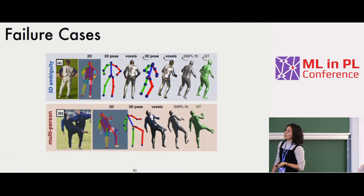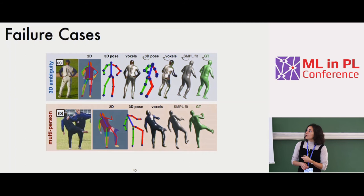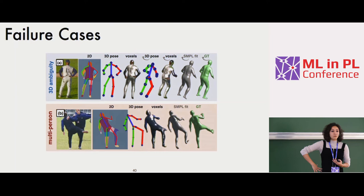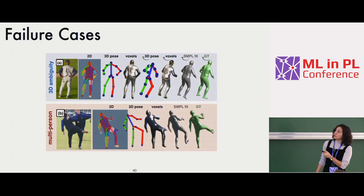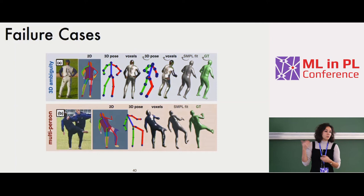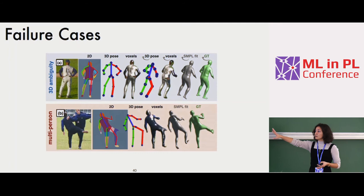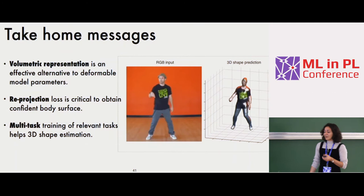Interesting failure analysis: typical failures of 3D estimation from 2D — it's actually an ambiguous problem requiring priors on how the human body is and how it moves. Otherwise, there's no way to know if the person's arm is on the belly or in front. Our model predicts it to be in front when the ground truth is also sometimes wrong — it's semi-automatic so ground truth fails too. Other failures are multi-person: when there's more than one person, especially in sports images, limbs get mixed up, sometimes producing a body with three legs.